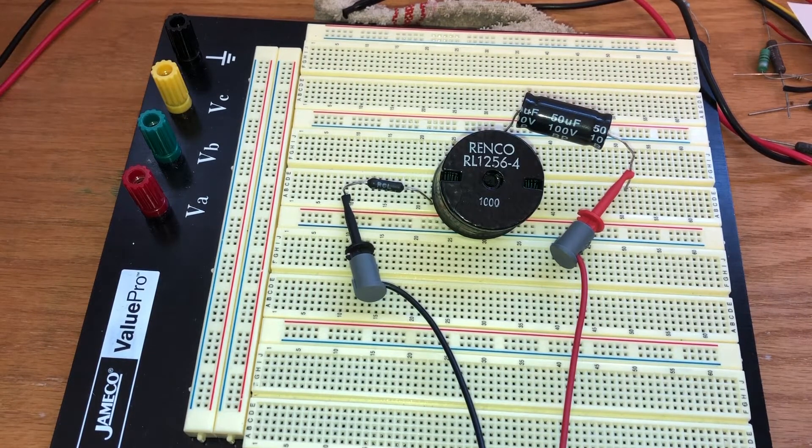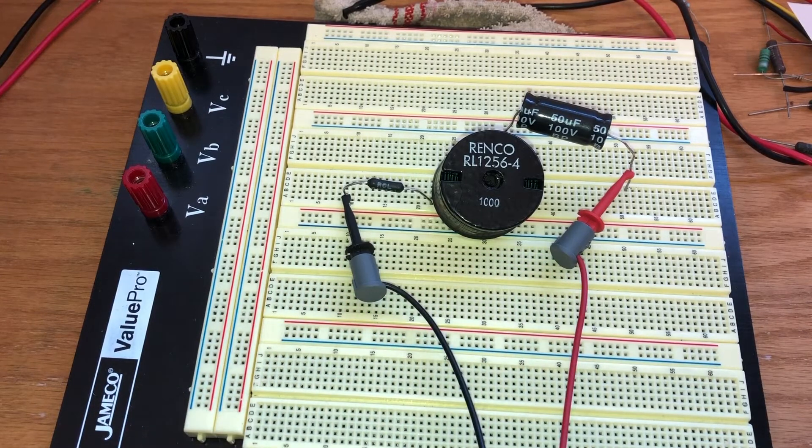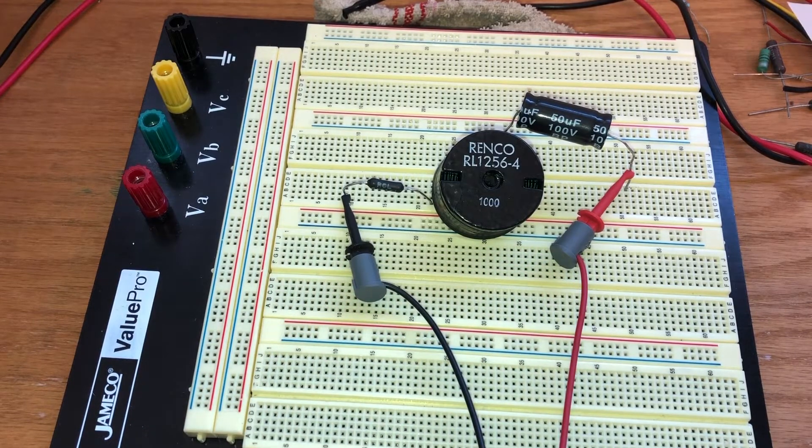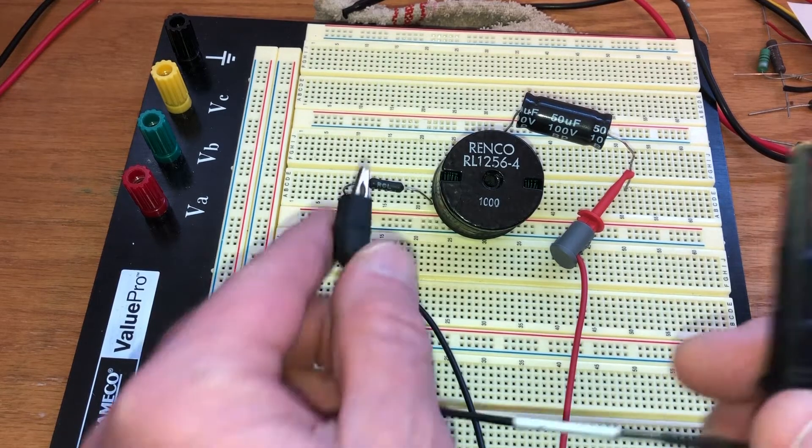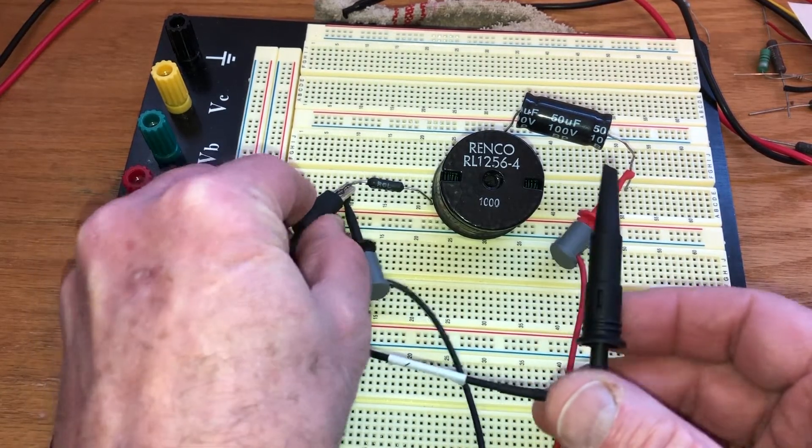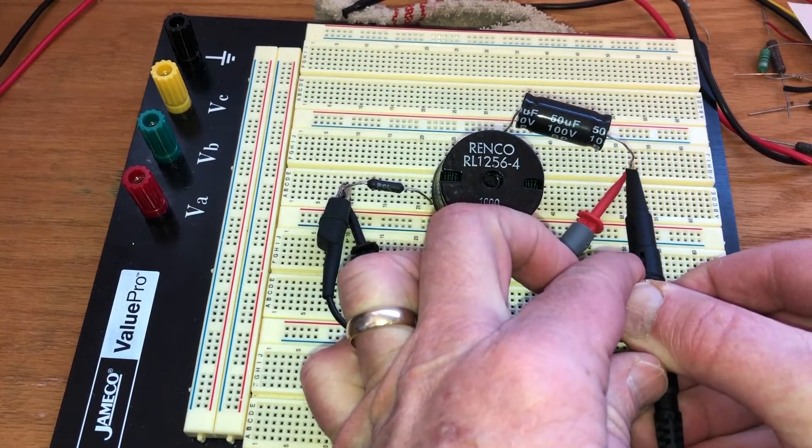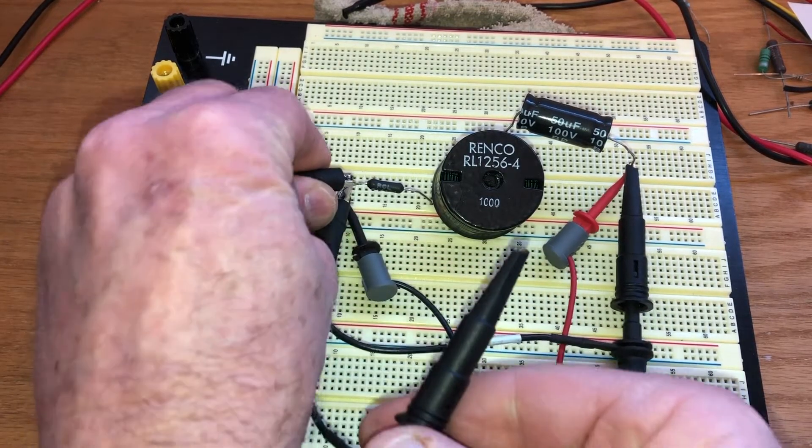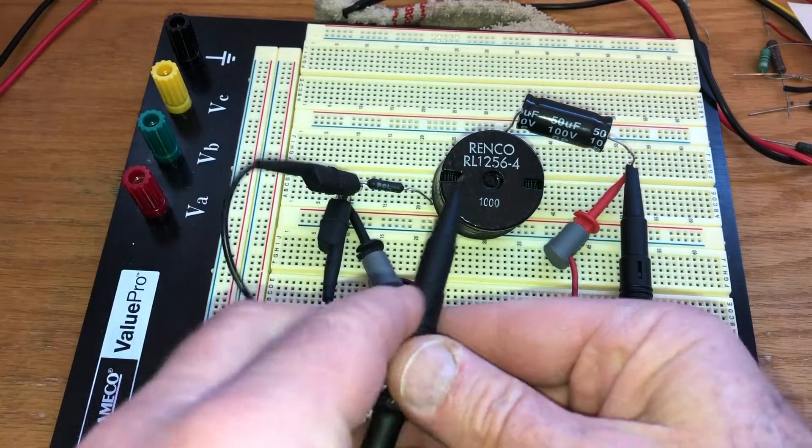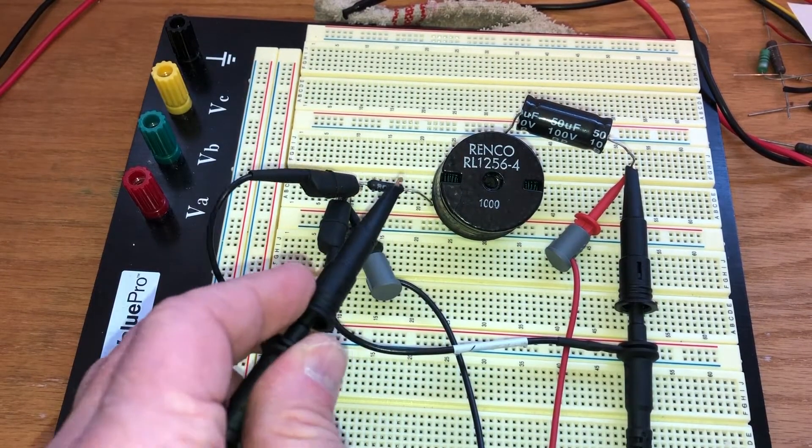So I have these two leads set up from the signal generator, and I'll be able to change the frequency, and I can measure that signal on channel A of the oscilloscope, and so channel B on the oscilloscope I'll just put across only the resistor to measure that resistance.